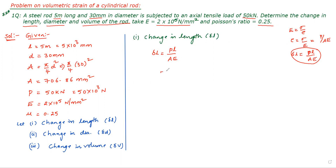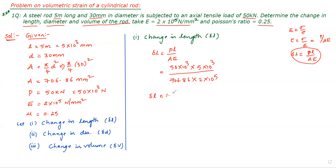Using the equation: δL = (P × L) / (A × E) = (50×10³ × 5×10³) / (706.86 × 2×10⁵). The answer: δL = 1.768 mm. First bit is complete.